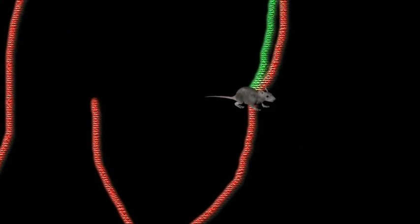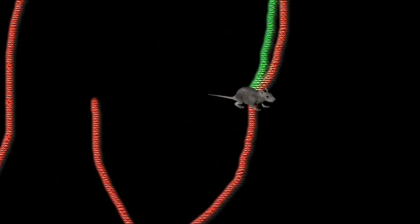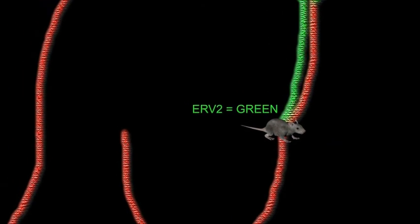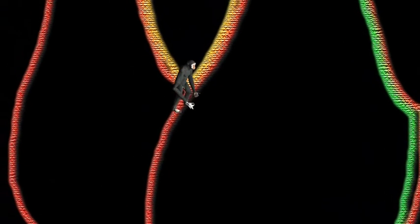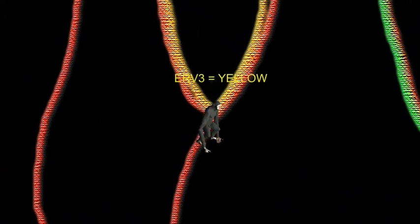A small rodent, let's call it Secundus Mammalius, is the common ancestor of mice and rats, and is infected by a new species-specific retrovirus that becomes endogenous — this is ERV-2. In a different line, Secundus Apis, the common ancestor of all great apes, acquires a third retrovirus, ERV-3.